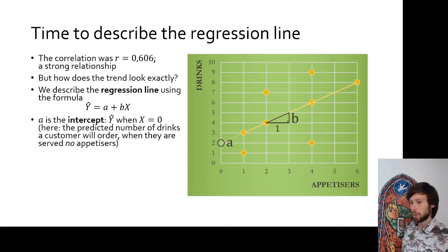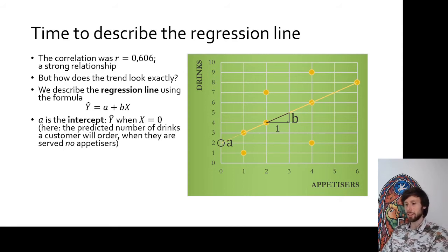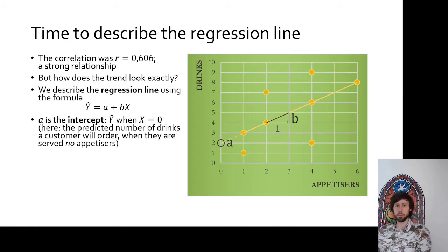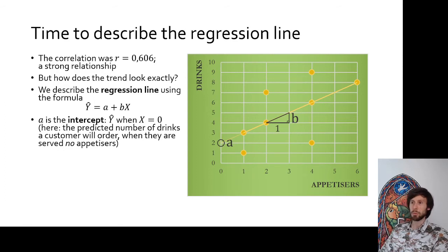Let us begin with a, the intercept. This is the mathematical definition. It would be the predicted score on y when x is equal to zero. A simpler expression would be to say, well, a is the point where the regression line intercepts the y-axis.